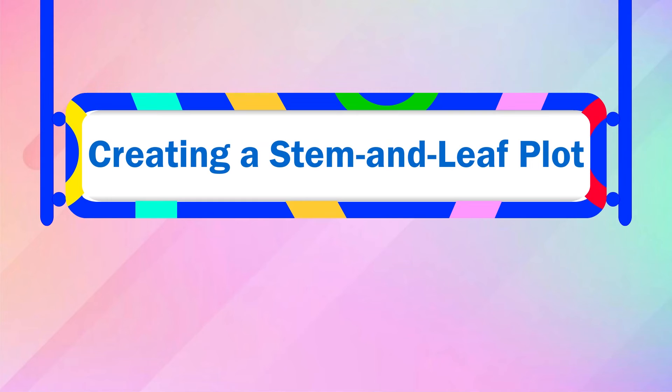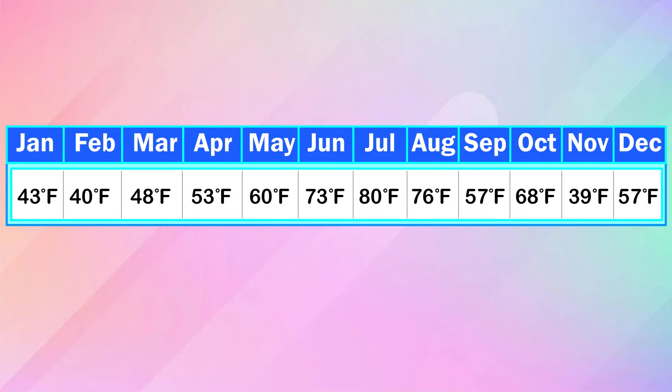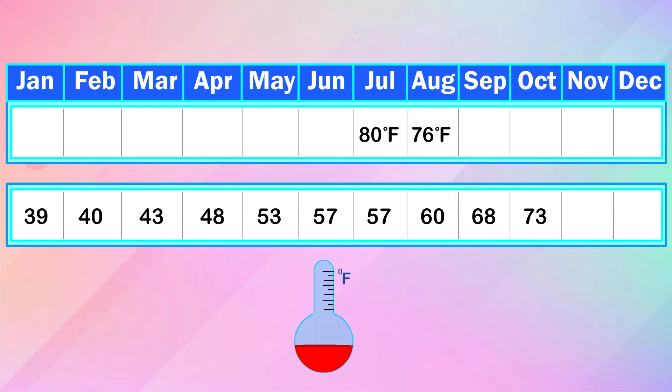Let's raise the bar and try our hands at creating a Stem and Leaf Plot using the temperatures of a place recorded from January to December. First, we need to arrange the data in ascending order and determine the highest and lowest temperatures.